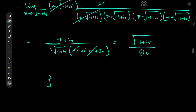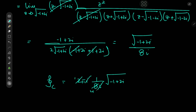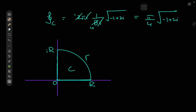The integral over the contour equals 2πi times the only residue. After cancellation of the i's, and noting 2 is an even number, we get π/4 times √(−1+2i) for the integral over the entire contour C.